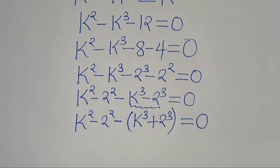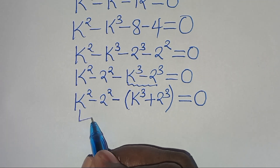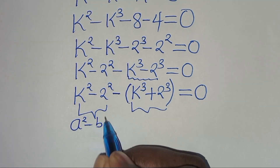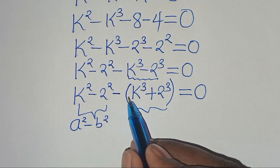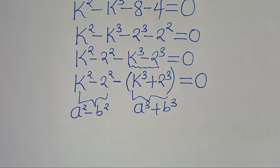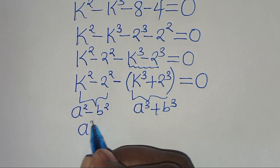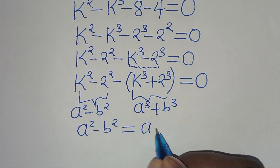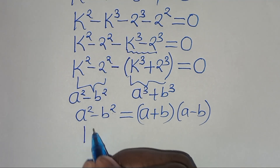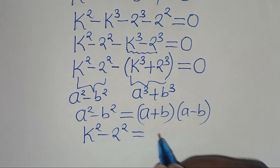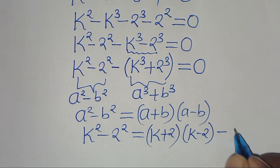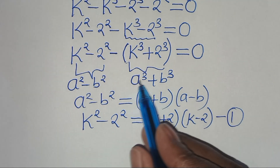We have two parts: the first part is the difference of two perfect squares, a squared minus b squared. The second part is the sum of two cubes, a cubed plus b cubed. For the first part, a squared minus b squared equals (a + b)(a − b), so k squared minus 2 squared equals (k + 2)(k − 2). Call this equation 1.